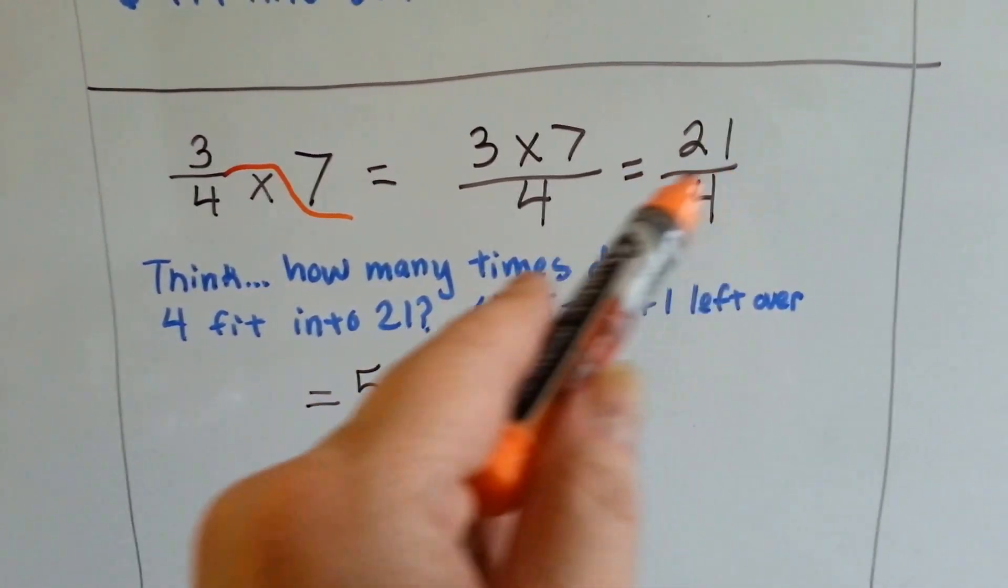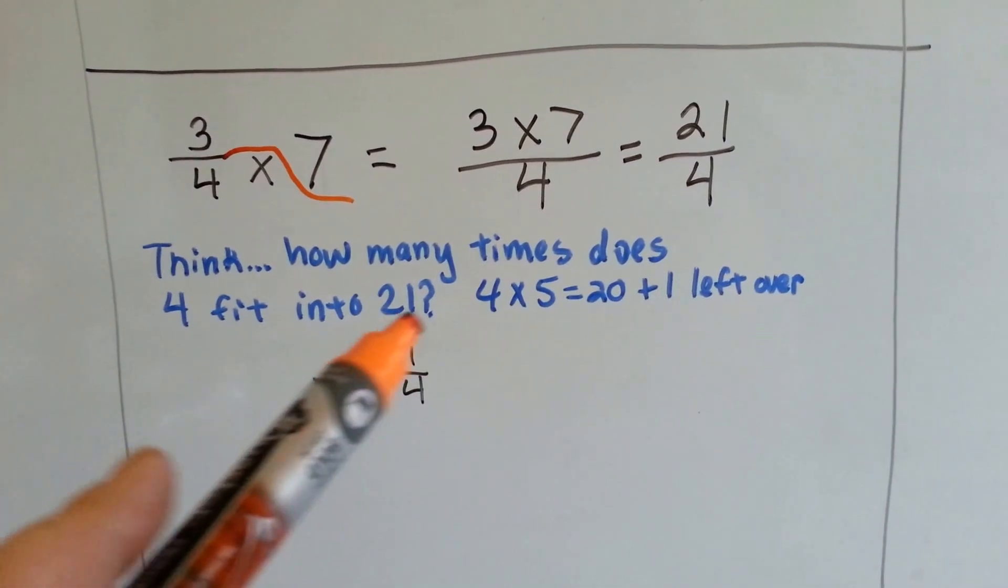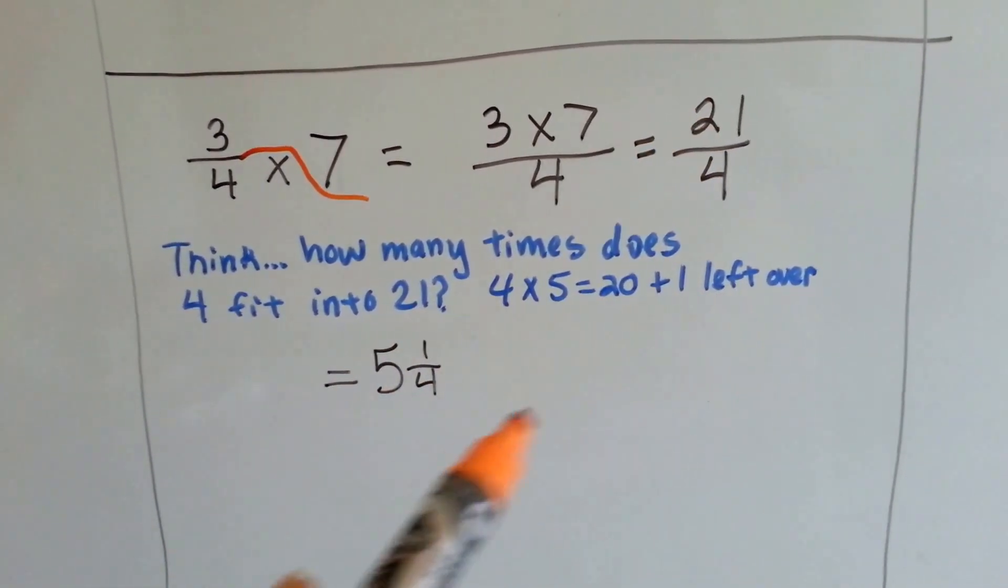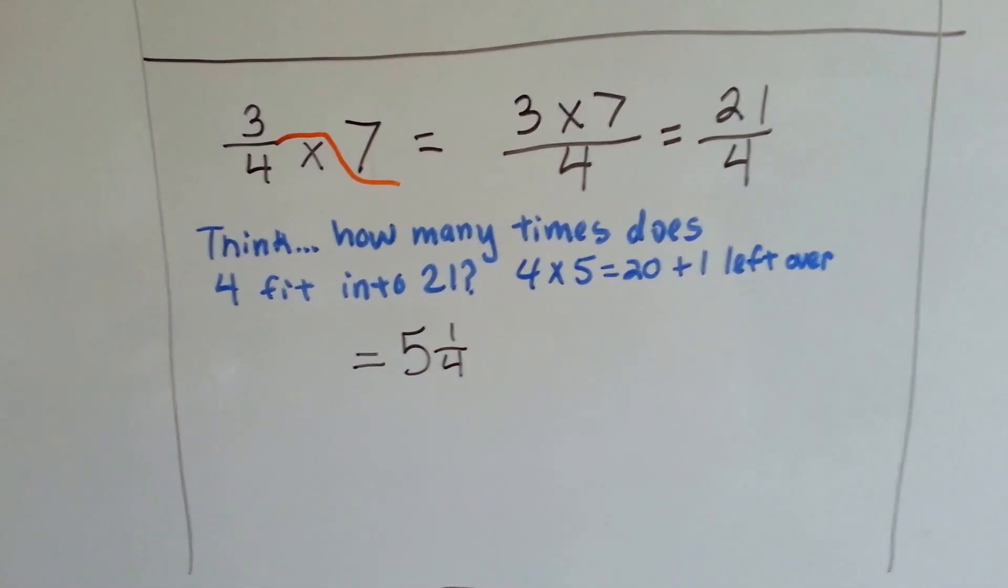This line right here, this flat fraction line, is really a division sign. 4 times 5 is 20, and for 21 there would be 1 left over. So we have 5 and 1 fourth, because the 1 fourth would be left over.